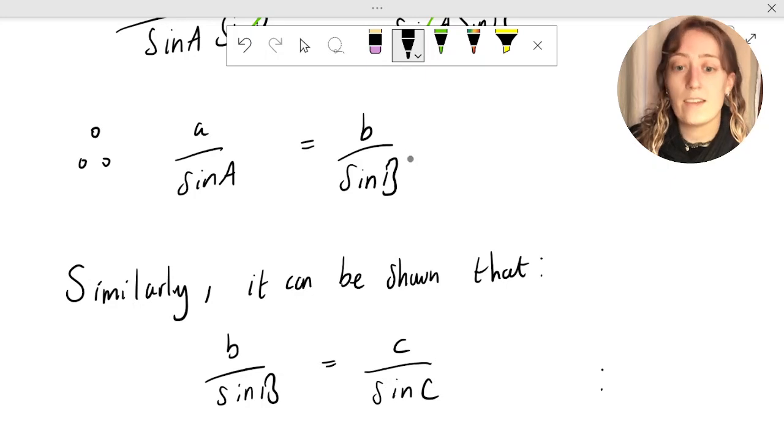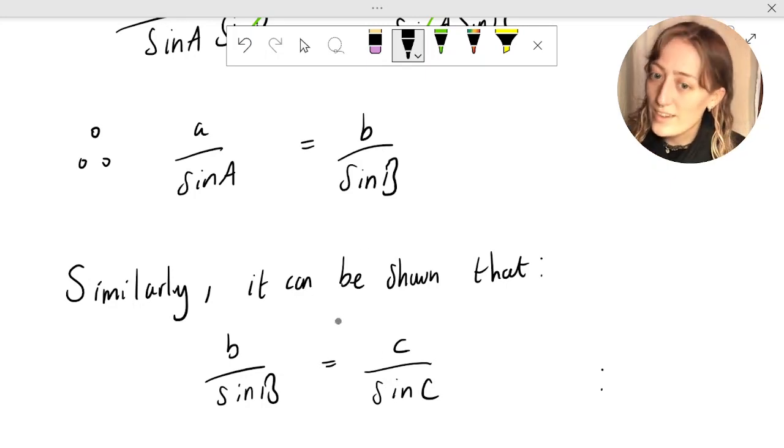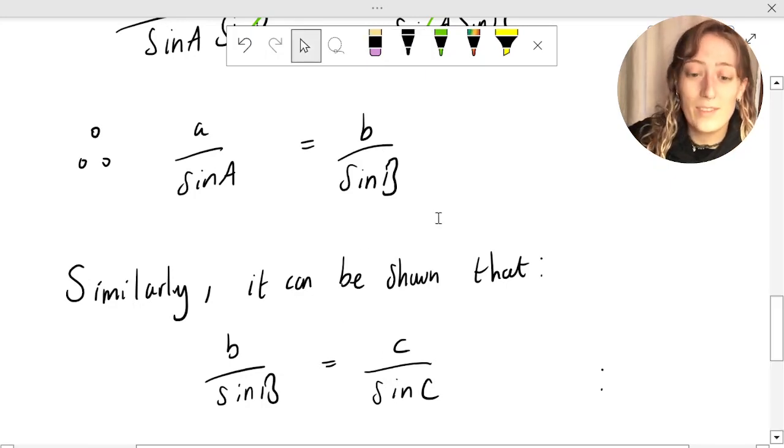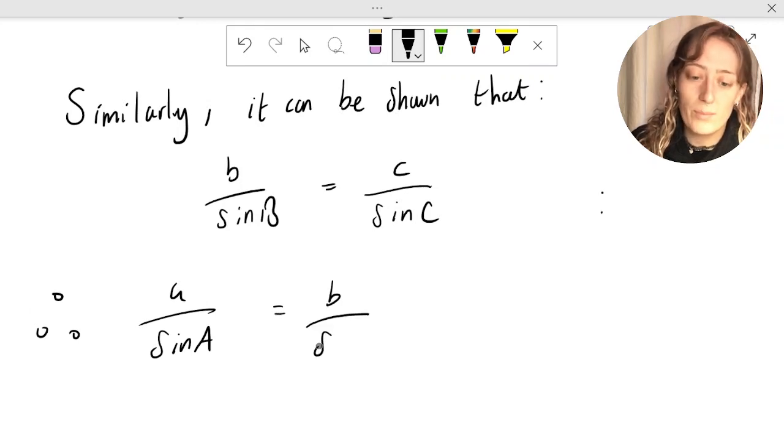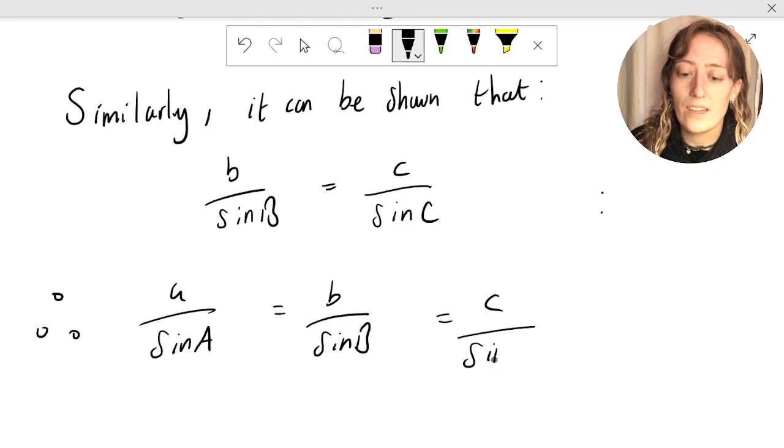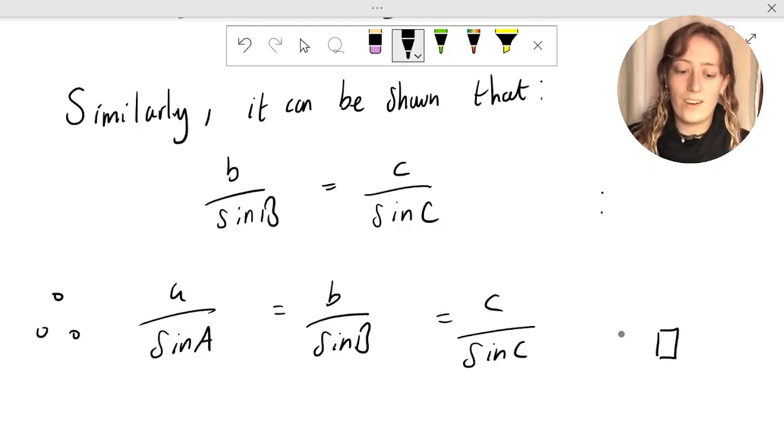So now we have a over sine a equals b over sine b, which is also equal to c over sine c. Therefore, a over sine a equals b over sine b equals c over sine c. And we are done.